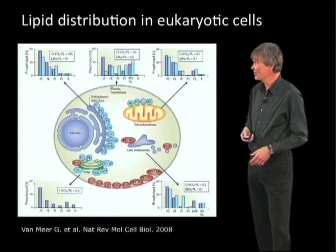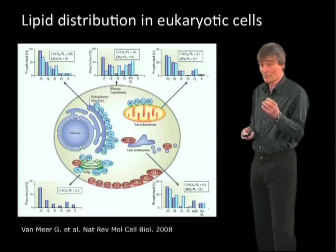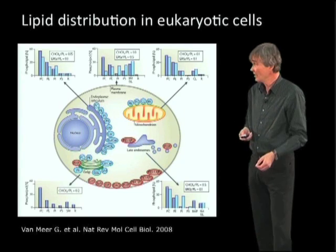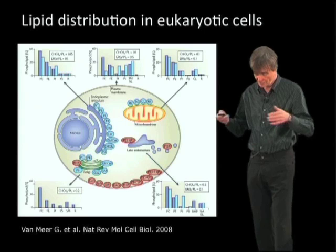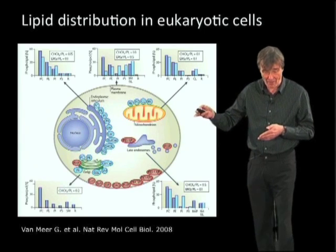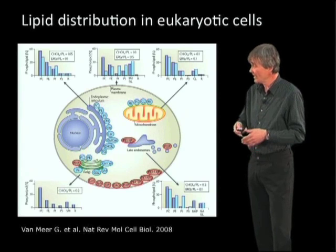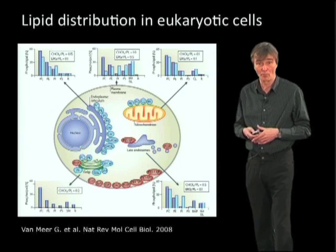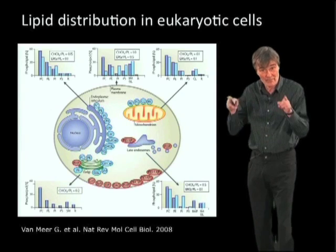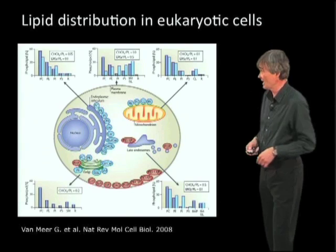Lipids also have to be distributed. Many of the lipids are made in the endoplasmic reticulum, and then they move from there to different destinations, either by membrane trafficking mechanisms or by other means, giving us the full lipid complement, which is different in the different membranes surrounding the organelles in our cells.